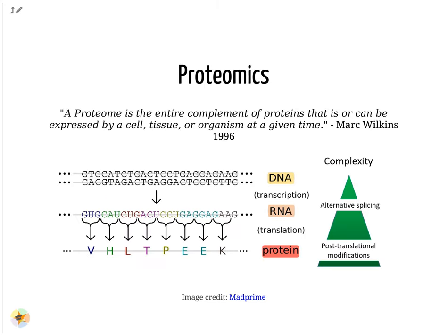Proteins are macromolecules that have many important functions in a cell. Protein coding genes are transcribed into mRNA, which is translated into amino acids. The amino acid chain forms secondary, tertiary and quaternary structures to obtain a functional protein. One gene may generate different proteins due to alternative splicing and post-translational modifications. Therefore, the proteome level shows a higher molecular complexity.